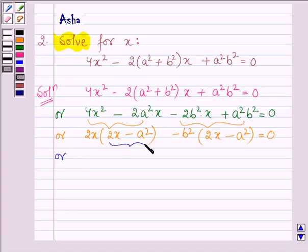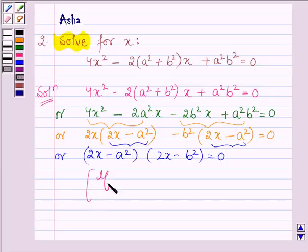Now, taking (2x - a²) common, it can be written as (2x - a²)(2x - b²) = 0. As we know, if the product of two numbers is equal to 0, this implies either one factor is 0 or the other is 0.